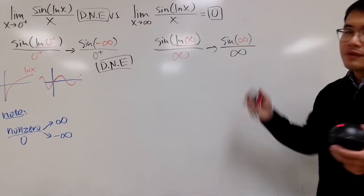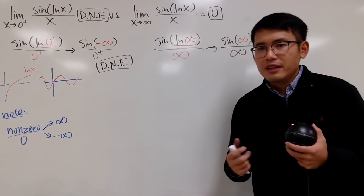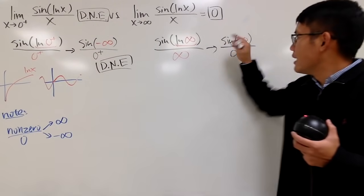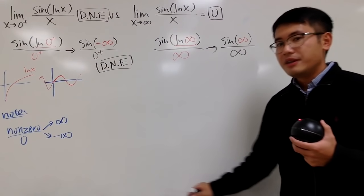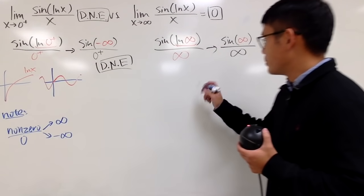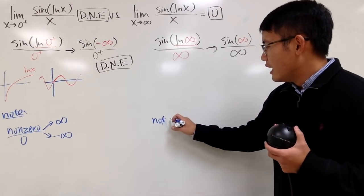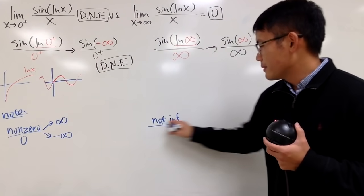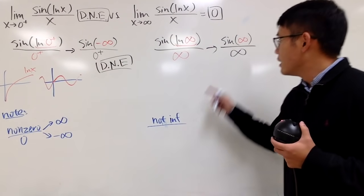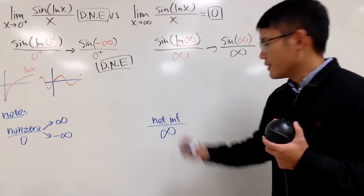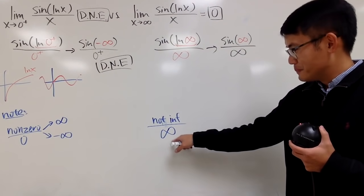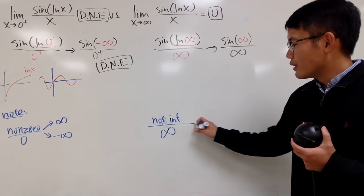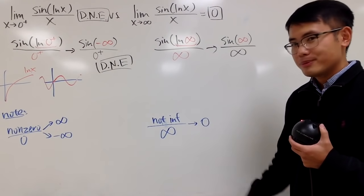On the top, we still have the same situation, sin of infinity, there's no limit, right? This, on the top, doesn't exist. However, in the denominator, we have infinity. So, let me make another note for you guys. So, I'll put it down right here. When we have anything that's not infinity, positive or negative, doesn't matter, over infinity, as long as it's not infinity over infinity, this right here, approach 0. Why?